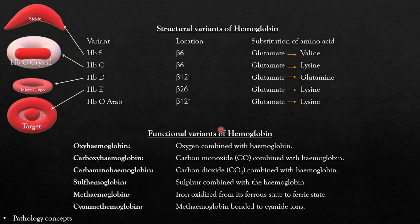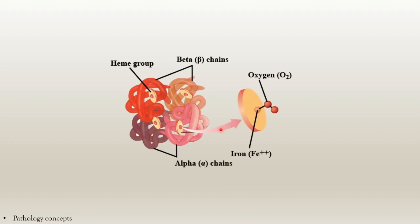Let's understand functional variants of hemoglobin. They form when different molecules attach to the heme molecule of hemoglobin, changing its function. When O2 is combined with hemoglobin, it is called oxyhemoglobin — the main form of hemoglobin seen in arterial circulation where blood carries O2 from the lungs to tissues.